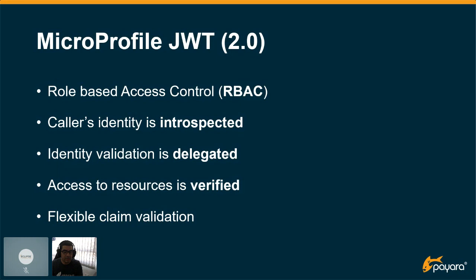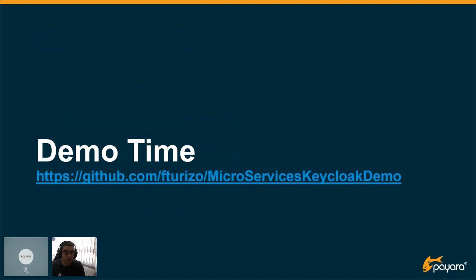With MicroProfile JWT, you tell a service which specific roles defined in your identity platform can call it. If a user tries to call a service without that role, the operation is denied. In terms of REST endpoint validation, users will receive an HTTP 403 Forbidden status code. MicroProfile JWT also allows services to introspect the identity of a caller — delegating token validation to the runtime so the application itself doesn't have to worry about it.